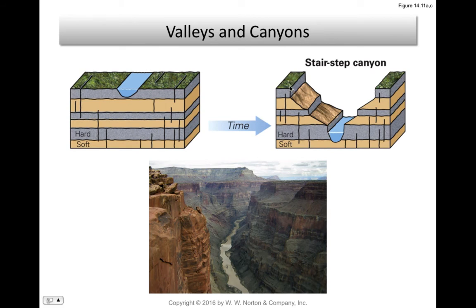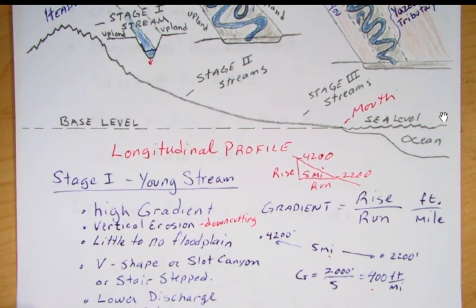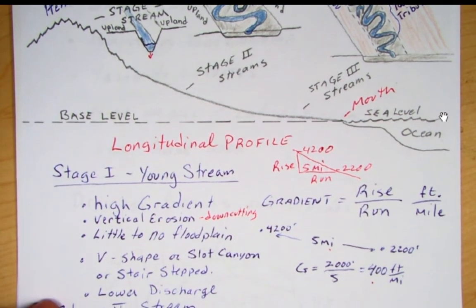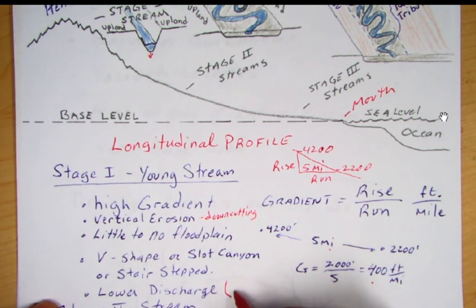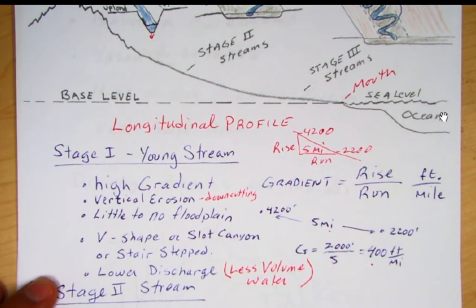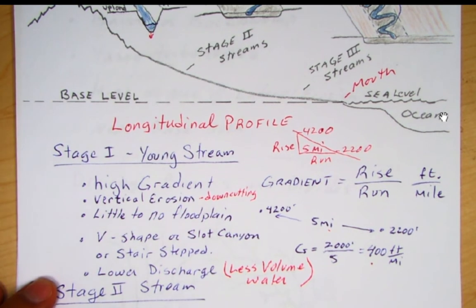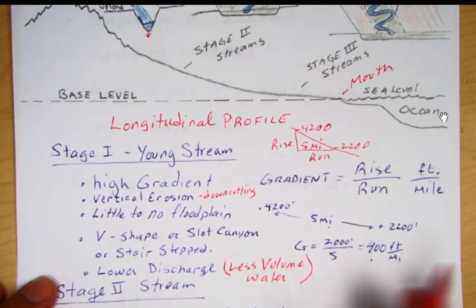In the staircase form, differential weathering creates steps where more resistant rock like sandstone or limestone forms steep slopes, and weaker shale erodes more easily to form gentler slopes — like the Grand Canyon. Stage one streams also have a lower discharge, which means less volume of water up there, so they have a smaller amount of discharge.